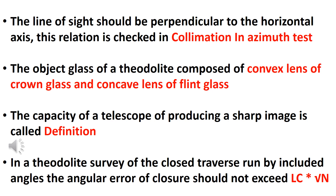The object glass of a theodolite is composed of a convex lens of crown glass and a concave lens of flint glass. In the object glass, the convex lens is called crown glass and the concave lens is called flint glass.